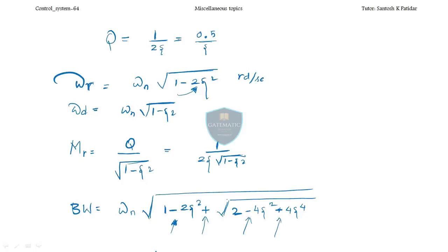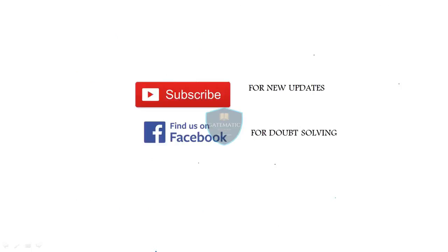Today we discussed two topics: effects of poles and zeros into the system, and frequency domain specification. We will meet with a new topic in the next video. For new updates you can subscribe to GateMatic, and if you have doubts you can find us on Facebook for doubt solving. Till then, take care and bye.